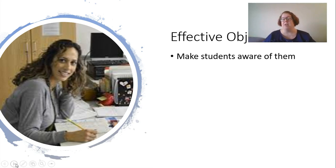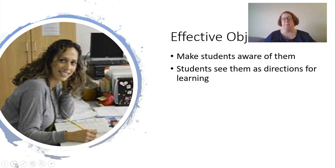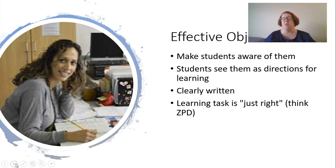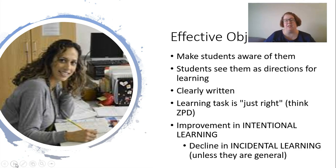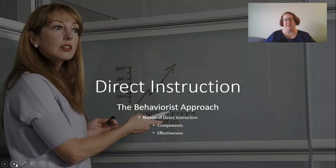Effective objectives make sure students are aware of those objectives and see them as directions for what they're learning. They're clearly written so that students and teachers can understand them, and the learning is just right — think of the zone of proximal development. When we use objectives we see an improvement in intentional learning, though sometimes a decline in incidental learning that happens organically. With more general rather than specific objectives, we can sometimes see more of that incidental learning.